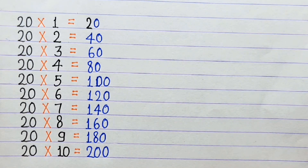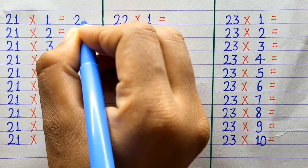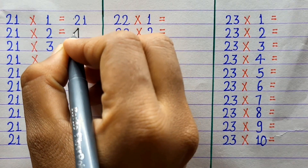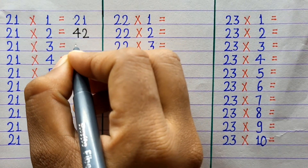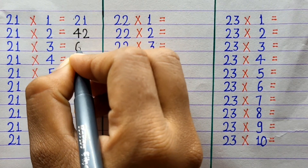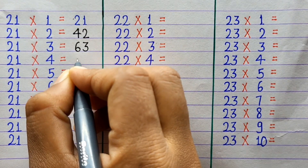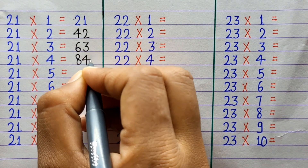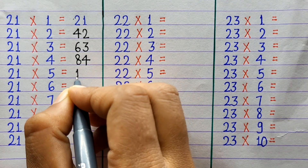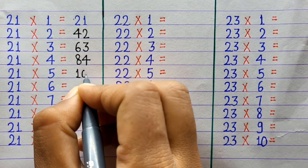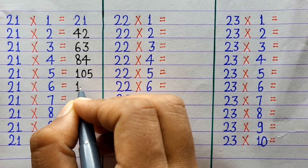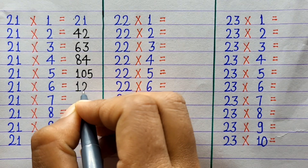21×1=21, 21×2=42, 21×3=63, 21×4=84, 21×5=105, 21×6=126.